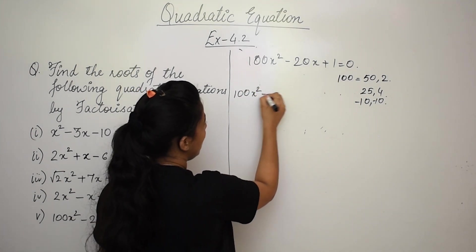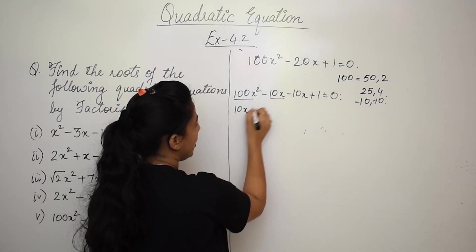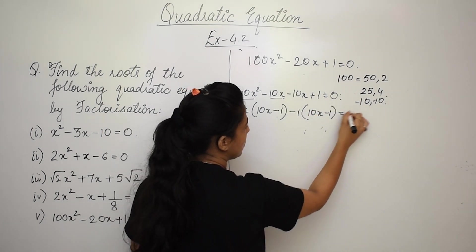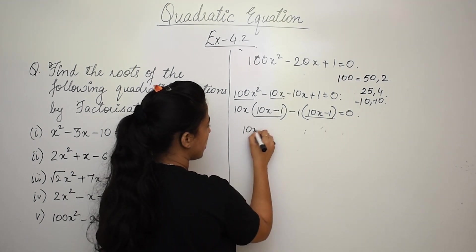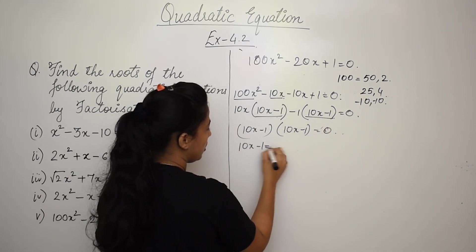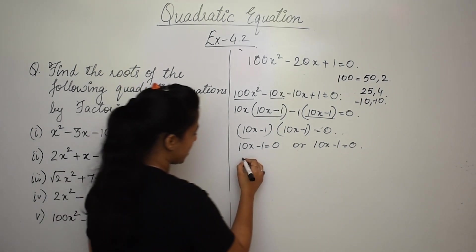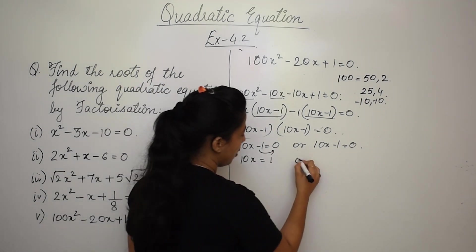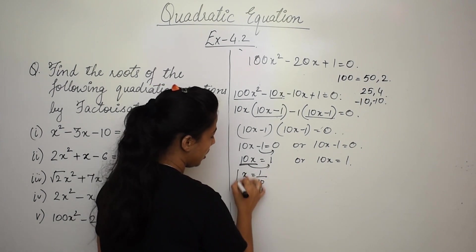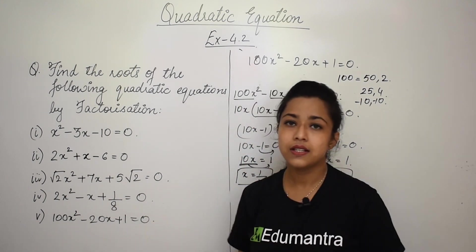The equation becomes 100x² - 10x - 10x + 1 = 0. Taking 10x common gives 10x(10x - 1) - 1(10x - 1) = 0. So (10x - 1)(10x - 1) = 0. Therefore 10x = 1, giving x = 1/10. The value of x is 1/10.